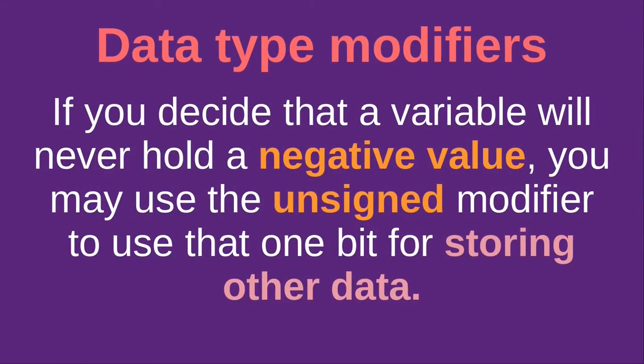In all of the types described — char, float, and double — one bit is used to indicate the sign, that is either positive or negative. This is very important. When we declare an int, which is actually four bytes, that means 32 bits, since one byte is eight bits. One of those 32 bits is actually for the sign — that is the sign of the value of the int you have declared.